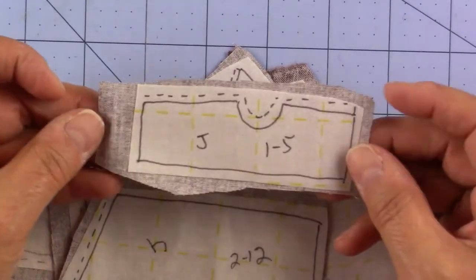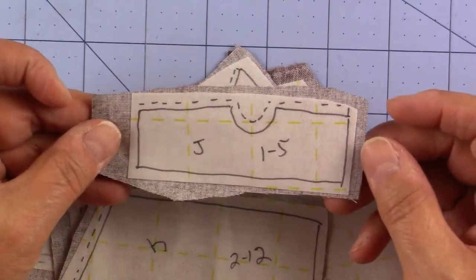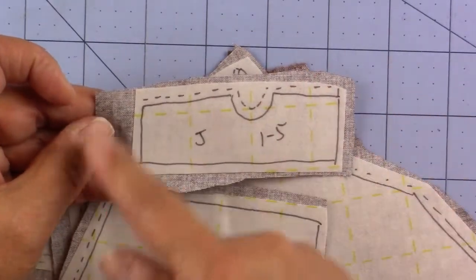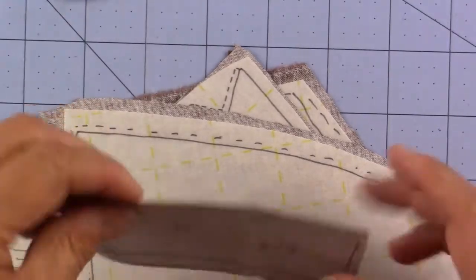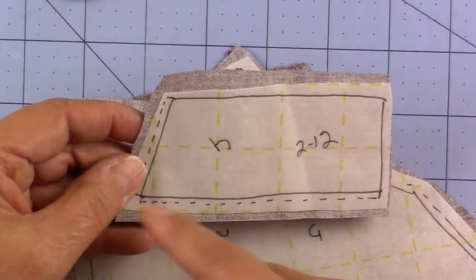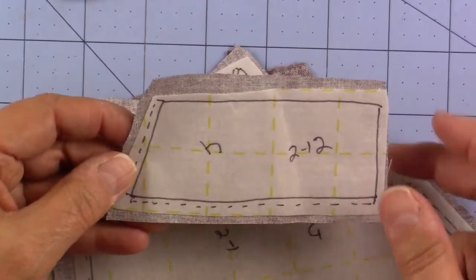After you've done that, you're going to cut out all the pieces now on the fabric and you just roughly cut around the Steam-A-Seam pieces, the traced pieces, and then roughly cut all of these out.